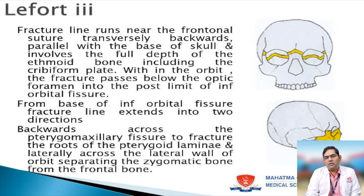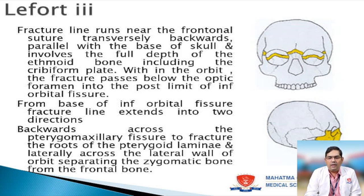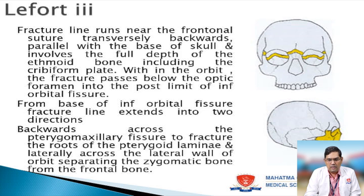The Lefort III fracture line, as visible in the diagram, completely disjunctions the midface from the base of skull. The fracture line runs near the frontonasal suture, transversing backward parallel with the base of skull, involving the full depth of the ethmoid bone including the cribriform plate. Laterally, proceeding within the orbit, it passes below the optic foramen into the posterior limit of the inferior orbital fissure, extending in two directions: backwards across the pterygomaxillary fissure to the roof of the pterygoid plates, and laterally across the lateral wall of the orbit, separating the zygomatic bone from the frontal bone.